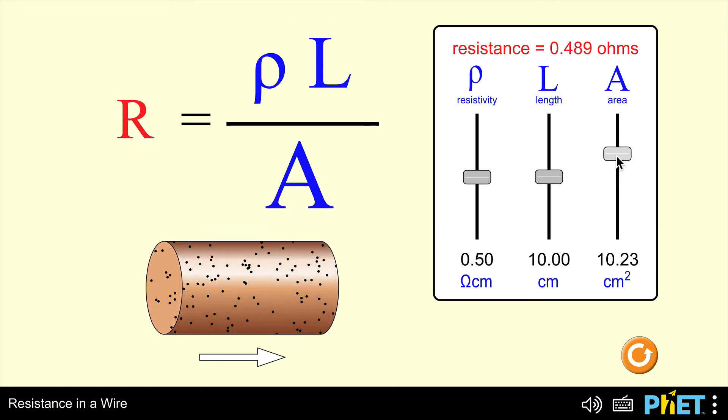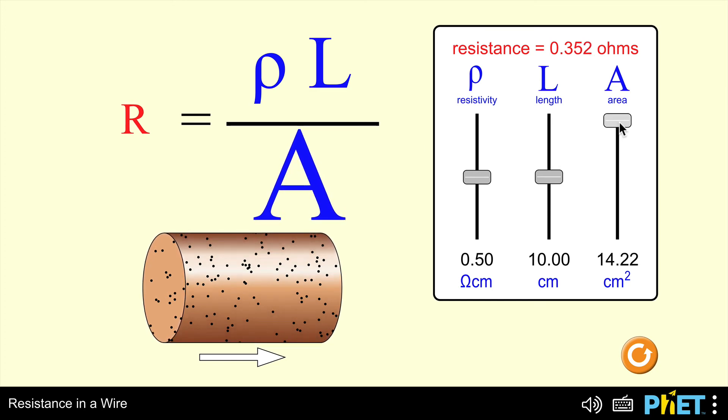And it actually is. So, as area increases, the cross-sectional area of that wire, then the resistance is decreasing.